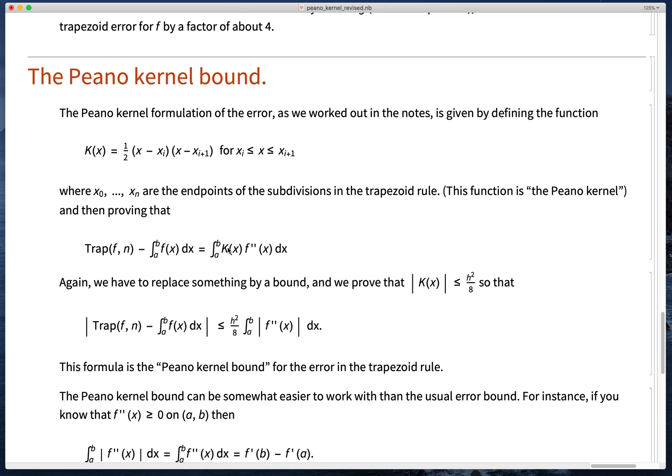So to get a bound on the error from this equation, again this is an exact formula so it can't be improved, we note that this piecewise quadratic function is always less than h²/8. So the absolute value of the error is less than or equal to h²/8 times the integral of the absolute value of the second derivative. And this is the Peano kernel bound.